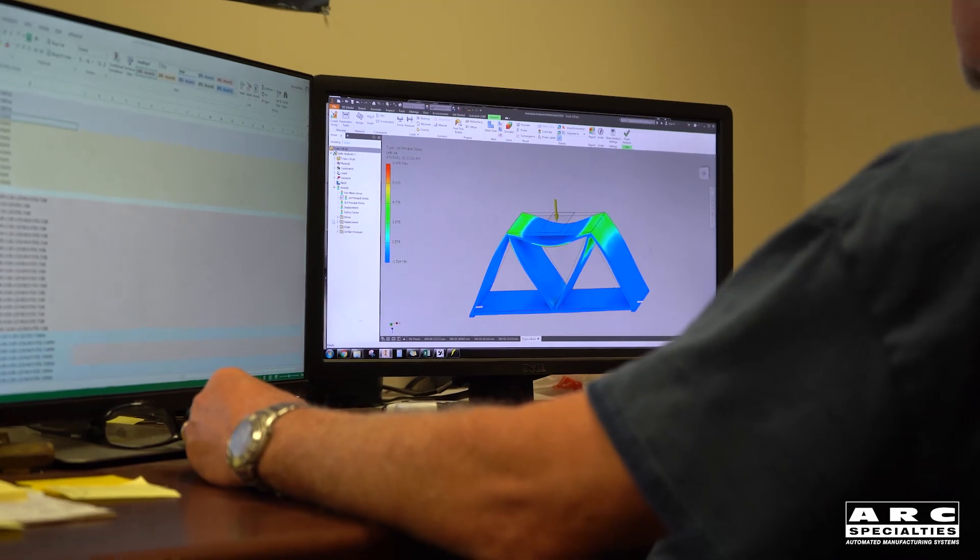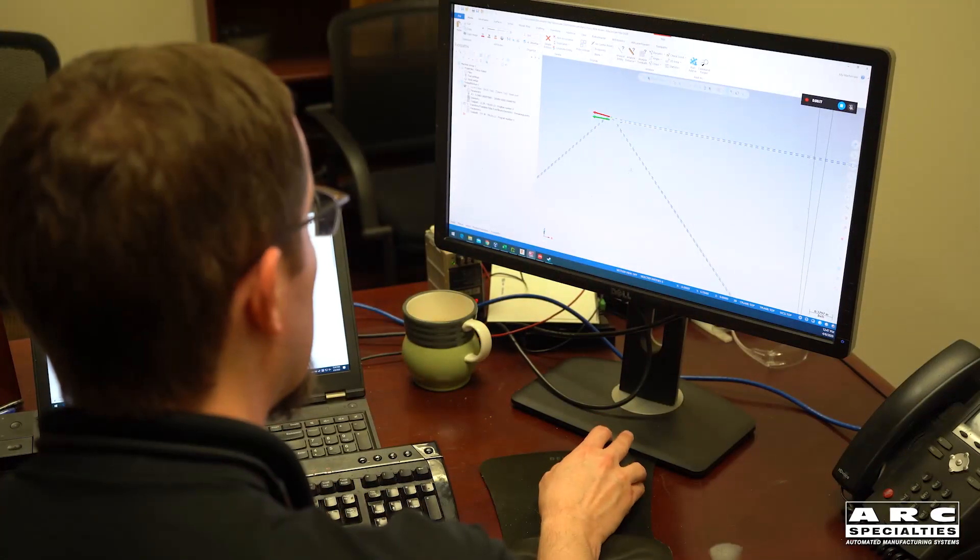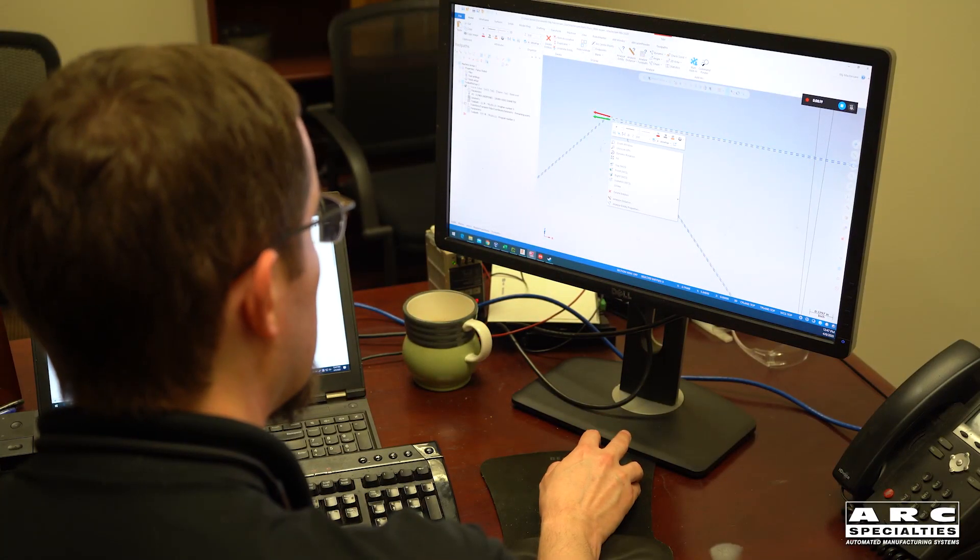Obviously this isn't an optimized design, but it will suit our purposes. The next step is where the magic starts. We import Mike's 3D CAD drawing into Kevin's Robot Master offline programming software and we generate the robot's toolpath.